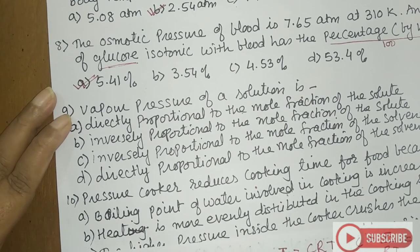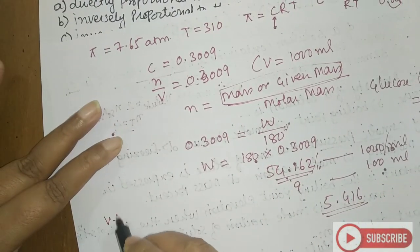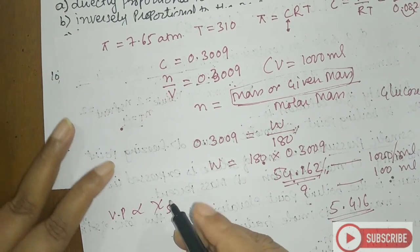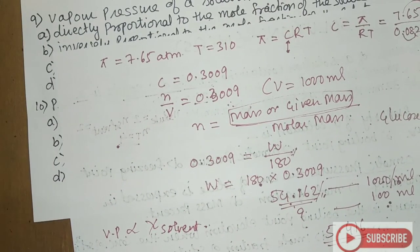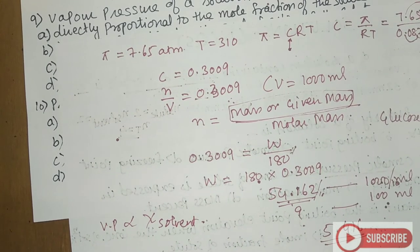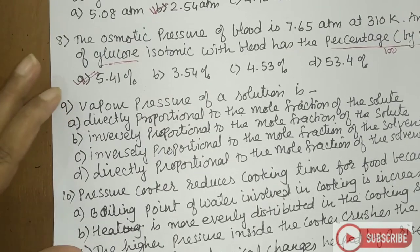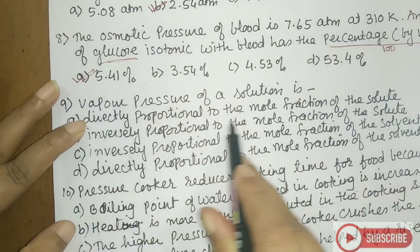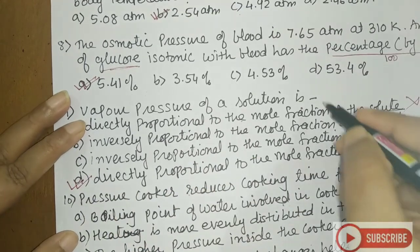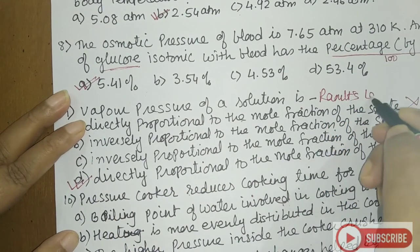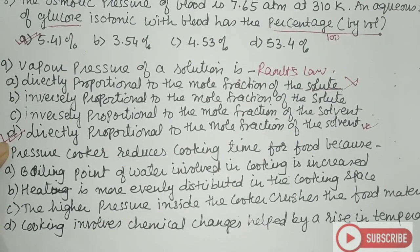Next question: vapor pressure of a solution is directly proportional to the mole fraction of the solvent. For solutions containing non-volatile solutes, Raoult's law states that at a given temperature, the vapor pressure is directly proportional to the mole fraction of the solvent. So the answer is the fourth option — Raoult's law for a non-volatile component.